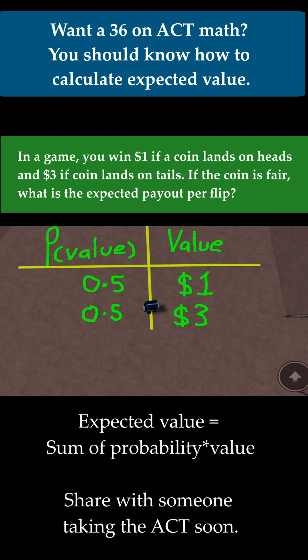Then now what do you do? You multiply each of the probabilities by its corresponding value, and then you add them all up. So let me do that. That'd be 0.5 times $1, and then we need to add that to 0.5 times $3.